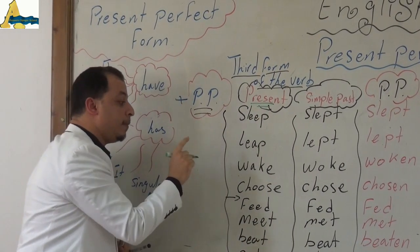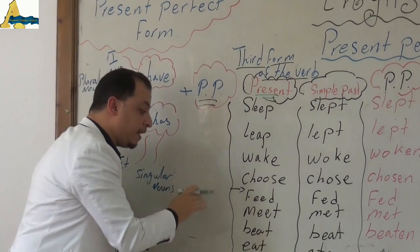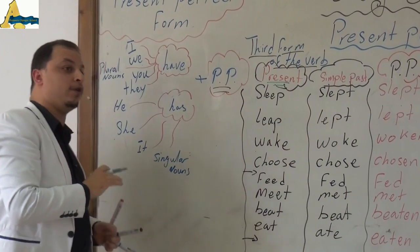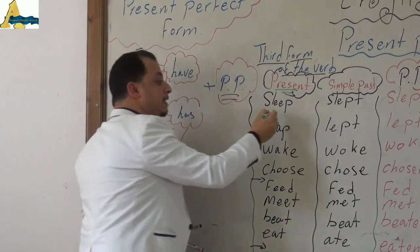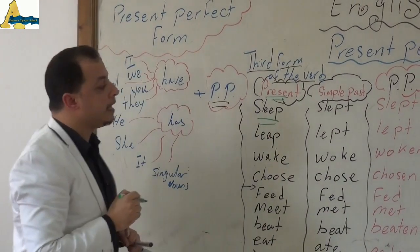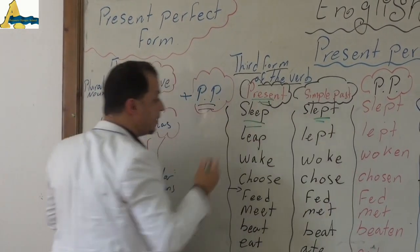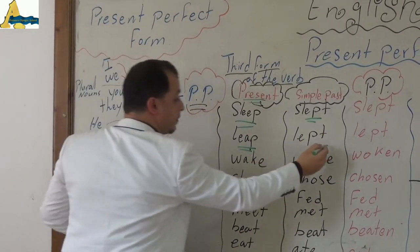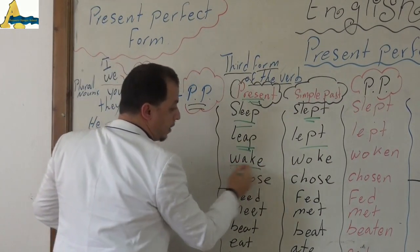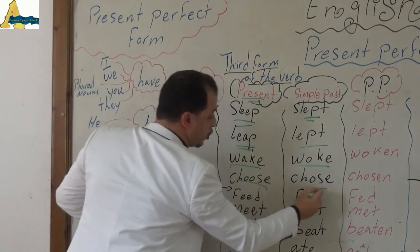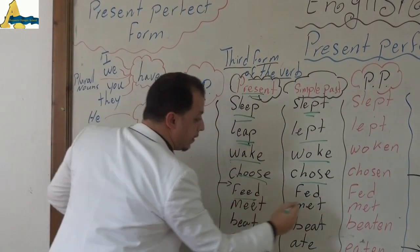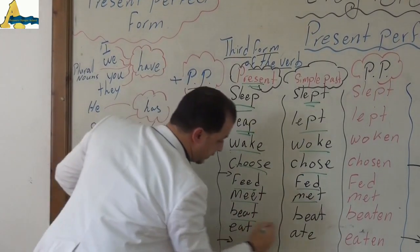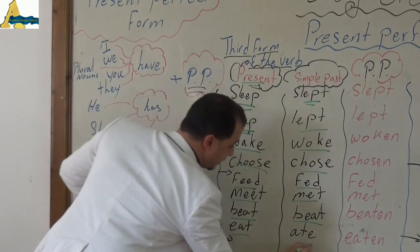We have: sleep, leave, wake, choose, feed, meet, beat, eat — these are the verbs in the present. What is the past of sleep? Slept. Leap — leapt. Wake — woke. Choose — chose. Feed — fed. Meet — met. Beat — beat. Eat — ate.